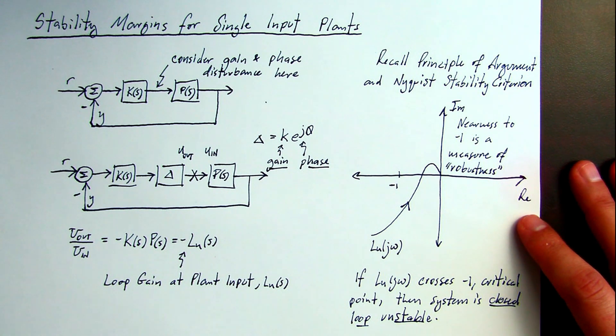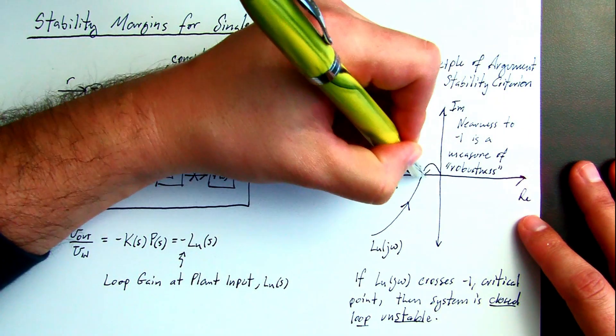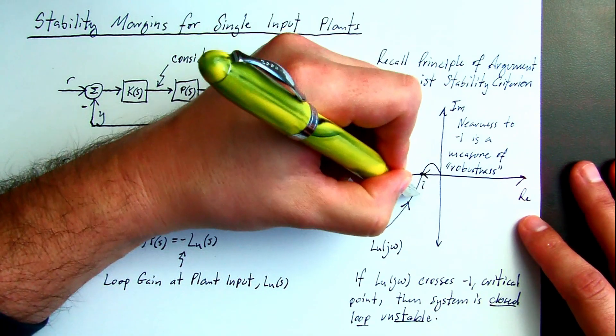In particular, two phasers of the loop gain are of interest. One we'll denote at the frequency omega-1, the phase angle of the loop gain is minus 180 degrees.